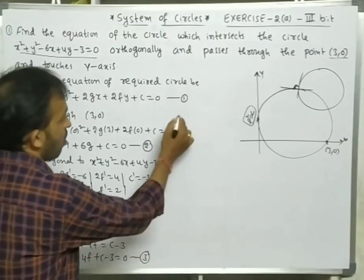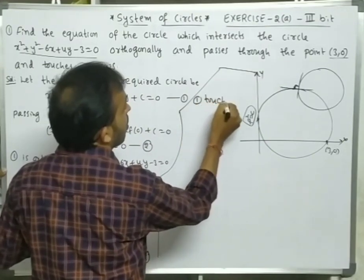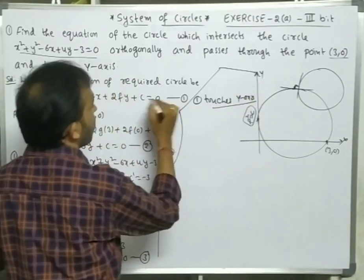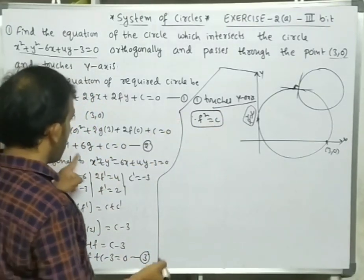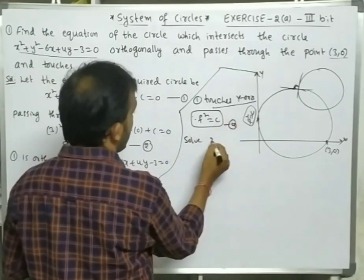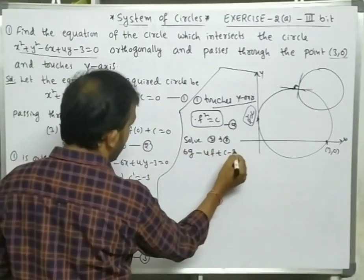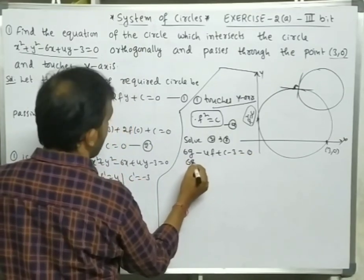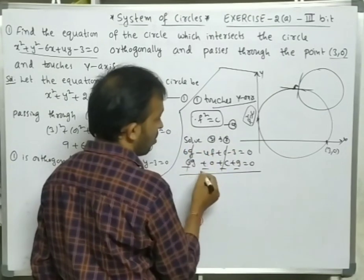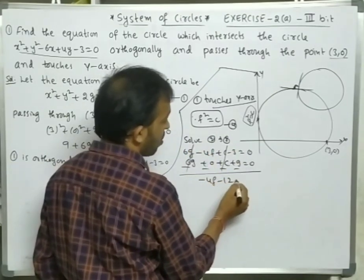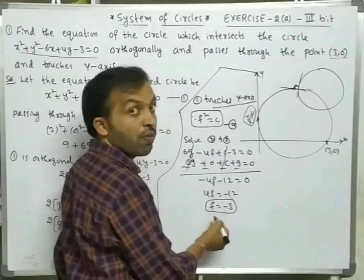Since equation 1 touches the y-axis, f² = c — equation 4. Now solving equations 2 and 3: subtracting, 6g cancels, giving −4f − 12 = 0, so f = −3. Substituting in equation 4: c = f² = (−3)² = 9.